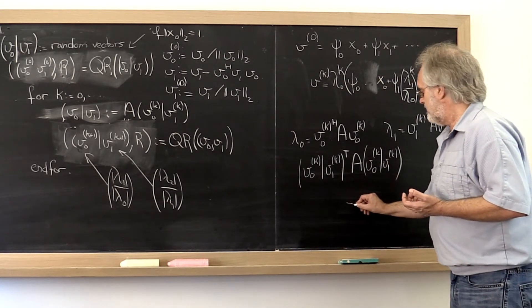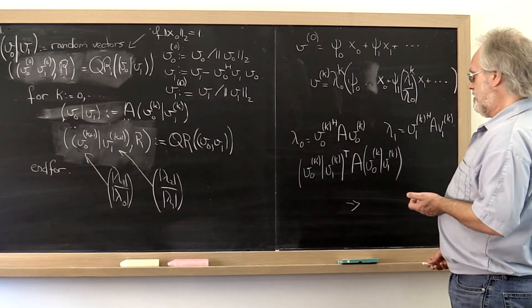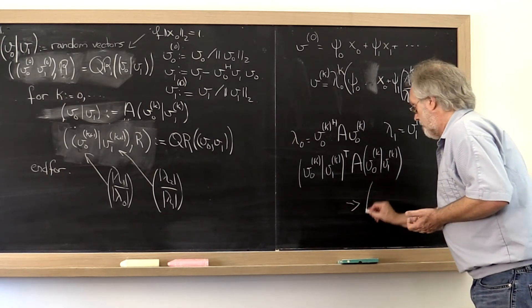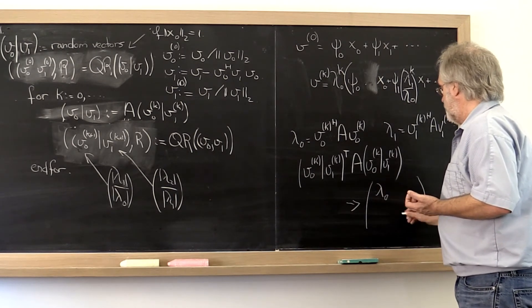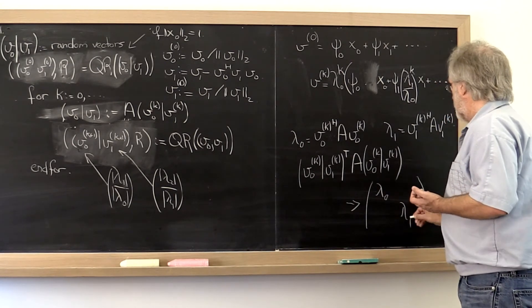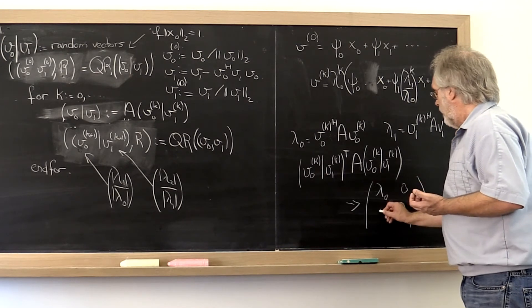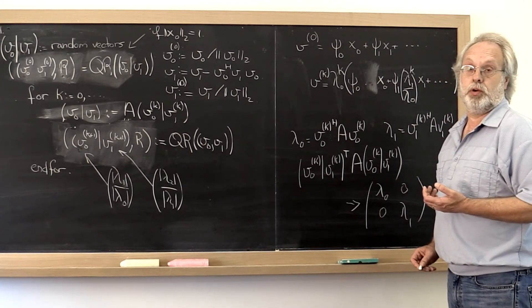what you expect is that that matrix, it's obviously a two by two matrix, would eventually give you the diagonal matrix lambda zero, lambda one, and then the off diagonal elements would go to zero.